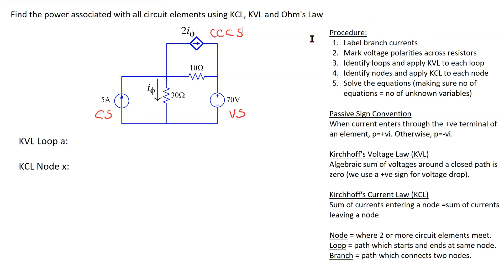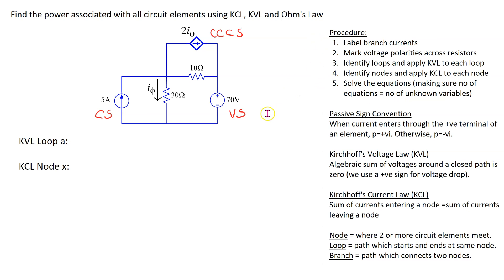The procedure of solving a circuit using KCL, KVL, and Ohm's law is as shown here. The main steps are to label the branch currents and then mark the voltage polarities across the resistors. Then identify loops and apply Kirchhoff's voltage law to each loop. Identify nodes and apply Kirchhoff's current law to each node, keeping in mind that we must have the number of circuit equations equal to the number of unknown variables. We will apply this process to find the power associated with all the circuit elements.